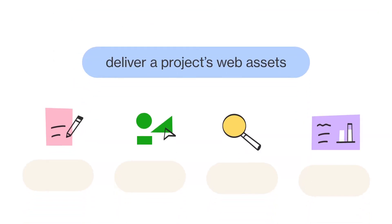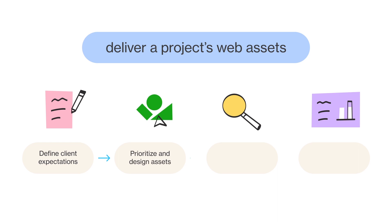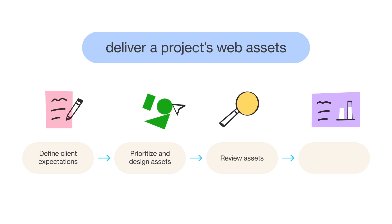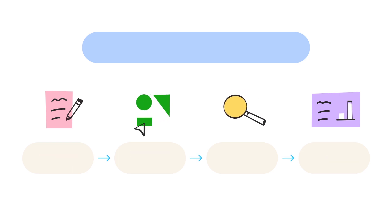Next, identify the recurring steps you take to achieve your goal. For example, the web agency steps might look like this. Go ahead and identify the recurring steps you take to get to your objective.